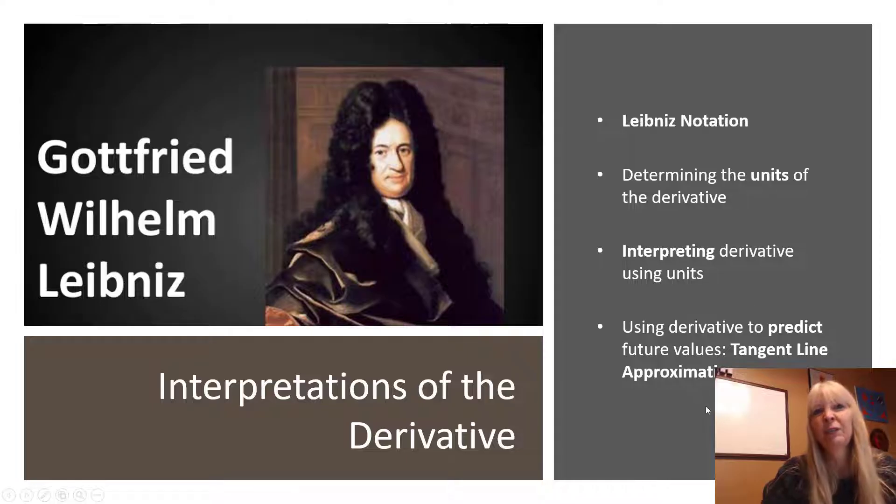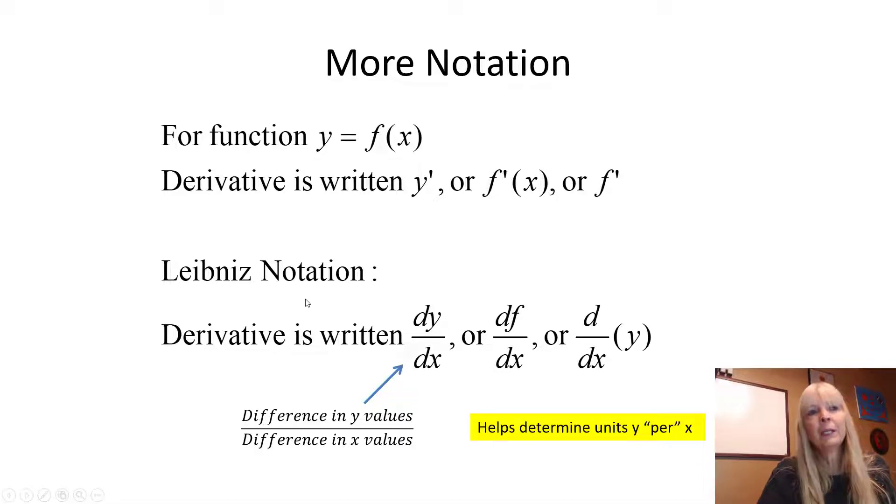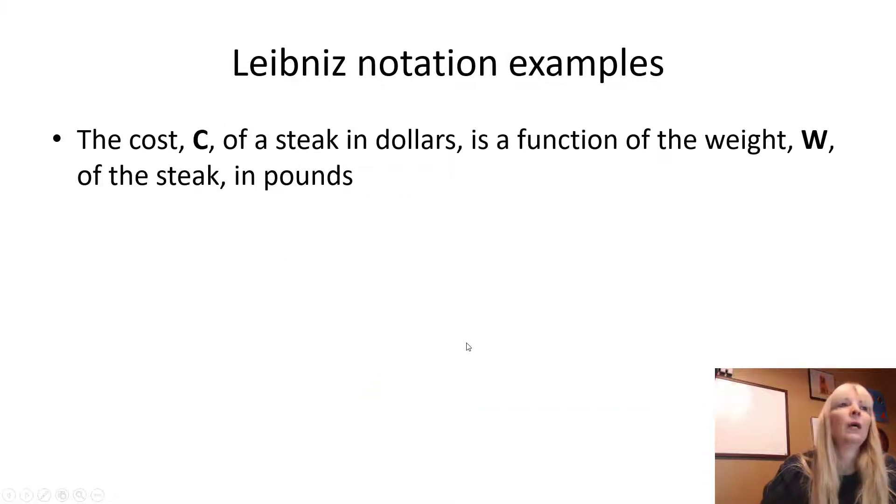There's different ways that you can write derivatives. I will say this dude here, Leibniz, I tend to like his way a little bit more. You'll see here why. You've seen f prime of x already. These other ways: y prime can also be written. I don't tend to like this last way because it kind of leaves me hanging - I don't know what they're taking the derivative of. Leibniz notation I like a lot because if you remember the delta y over delta x, this helps me with units. This tells me the difference in y over the difference in x, which would be the y units per the x units.